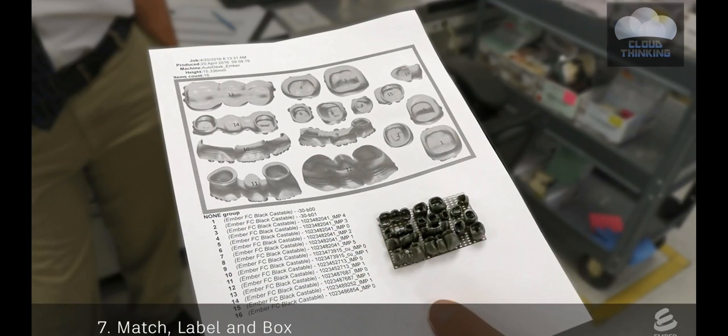Because the print can have multiple crowns from multiple patients, they create a sheet for each print. The sheet has an image that matches each crown and coping on the print with a specific patient. For example, the image labels crowns number one, two, and three, which match these crowns on the print and these cases for a patient.